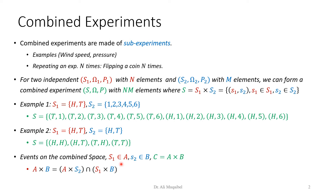We can generalize: if we look at two experiments, the first one has sample space S1 with small s1 possible outcomes, and the second has s2 possible outcomes. The combined experiment will have the product of the two — we can write this as A cross B.